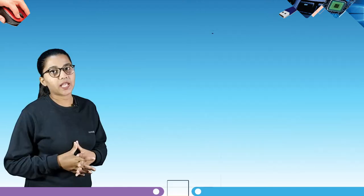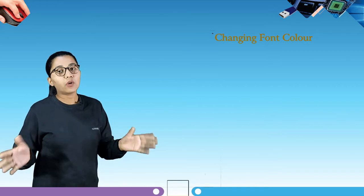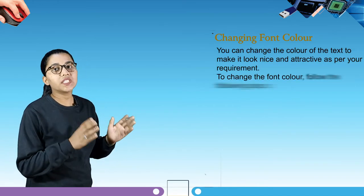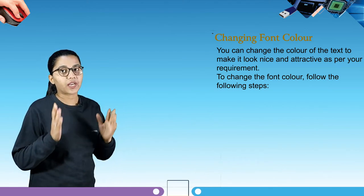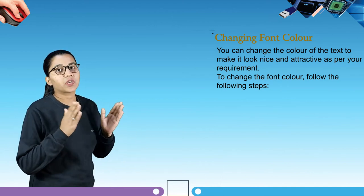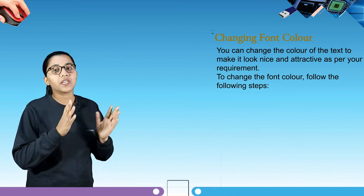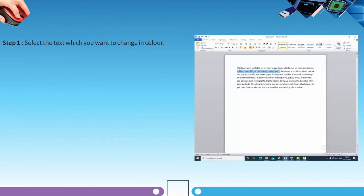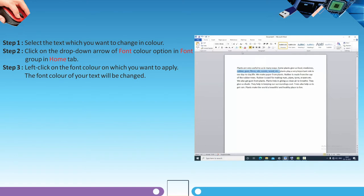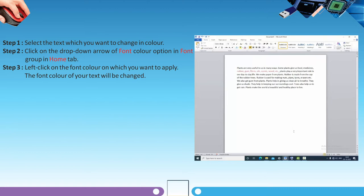Now jumping to our next topic — changing font color. You can change the color of the text to make it look nice and attractive as per your requirement. To change the font color, follow these steps: Step one — select the text you want to change in color. Step two — click on the drop-down arrow of the Font Color option in the Font group on the Home tab. Step three — left-click on the font color you want to apply. The font color of your text will be changed.